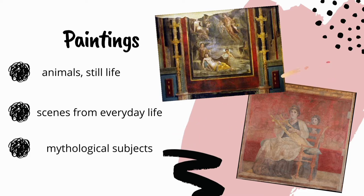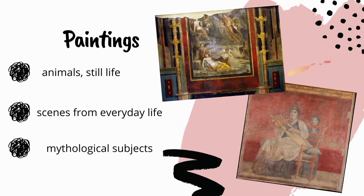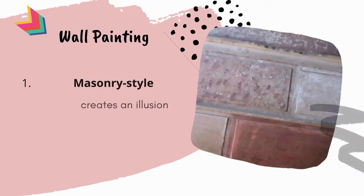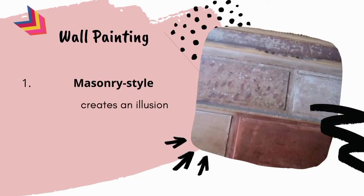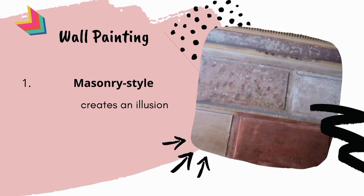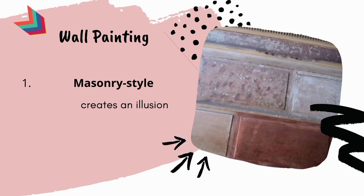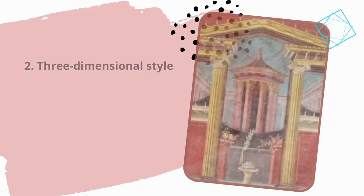Roman painting provides a wide variety of themes such as animals, still life, scenes from everyday life, portraits, and mythological subjects. There are four styles of wall painting. The first style, called the masonry style, creates the illusion that the wall is composed of stone blocks — especially marble — of various colors and patterns.